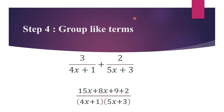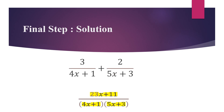Here we have it. Expressing as a single fraction, the simplified algebraic fraction now reads (23x + 11) all over (4x + 1)(5x + 3). Whereas before we had two fractions, now we only have one — so it has been clearly simplified.